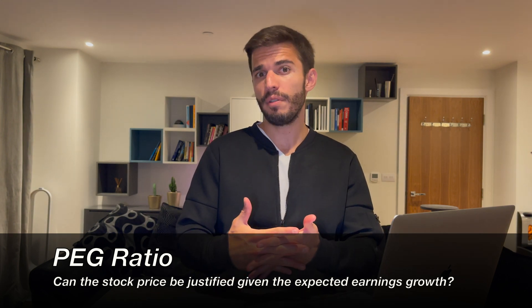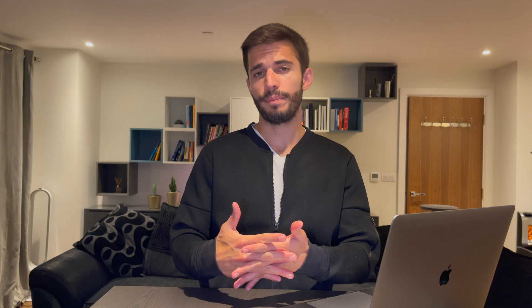Let's look at an example. If we have a P/E ratio of 30 and an EPS growth of 15% for the next five years, we would get a PEG ratio of 2. As a general rule, most investors agree that the closer to 1, the better — meaning the price of the stock is justifiable given the expected growth.